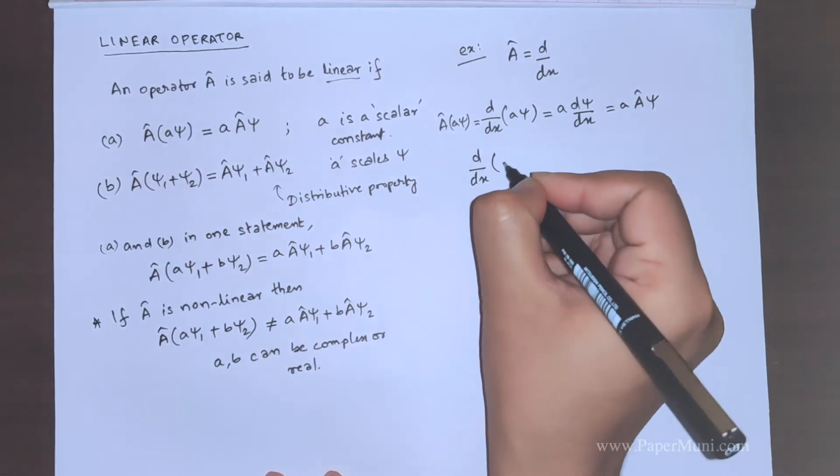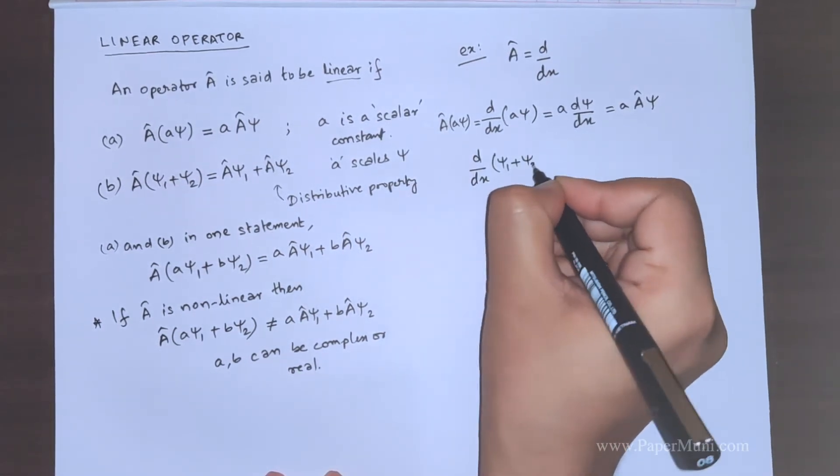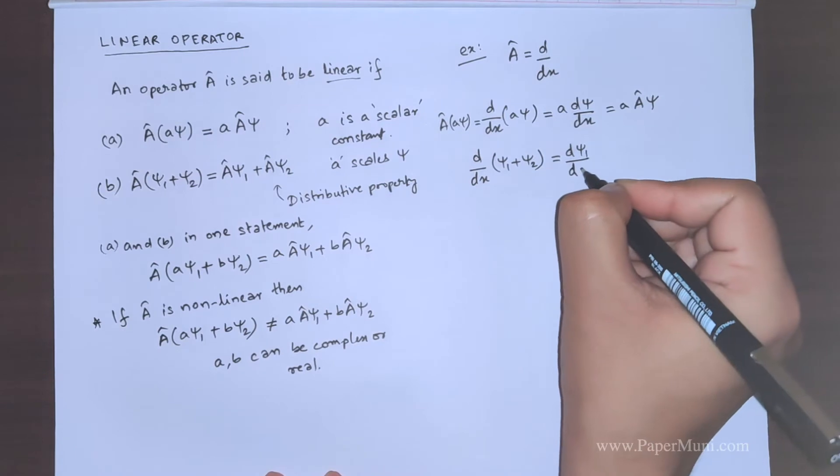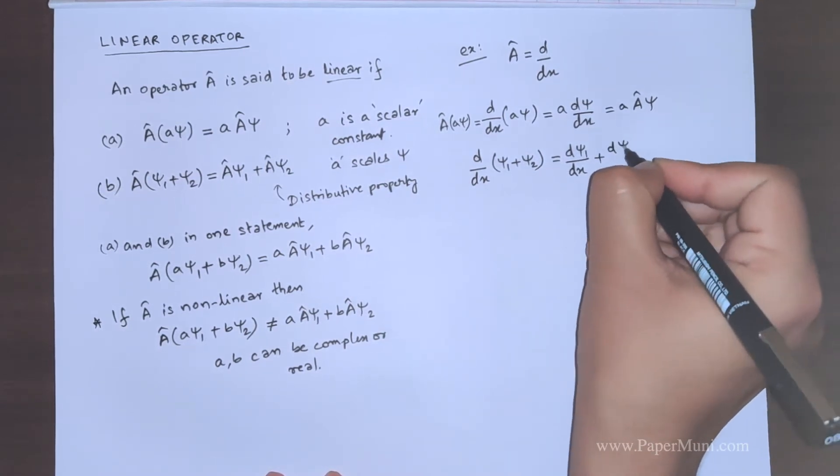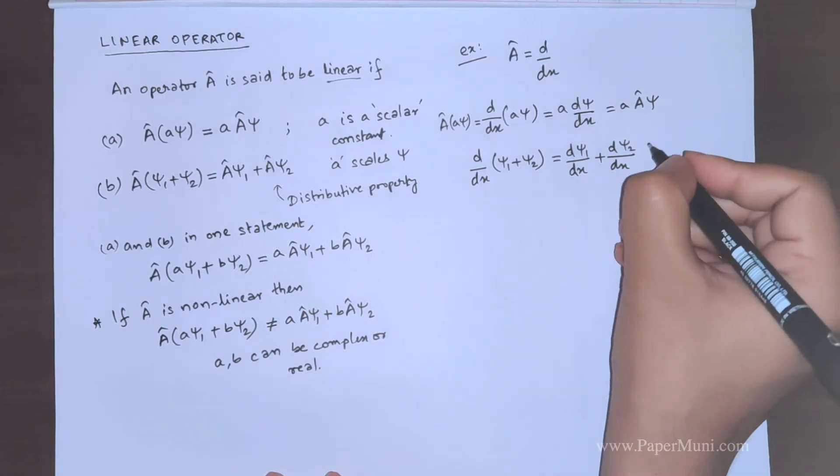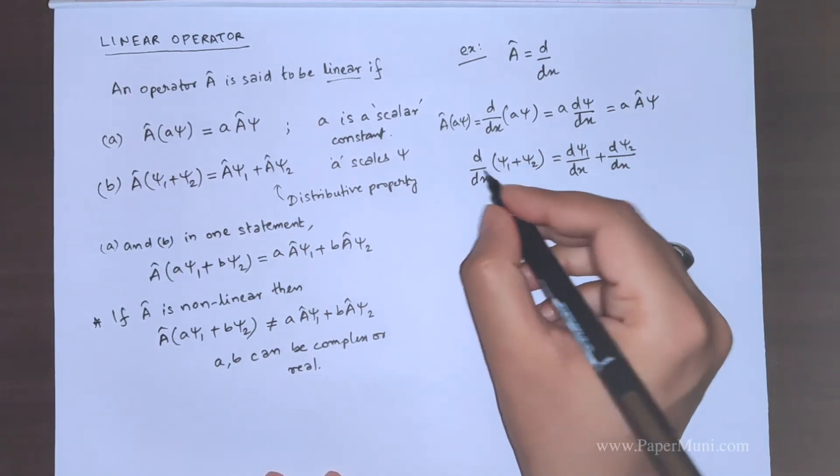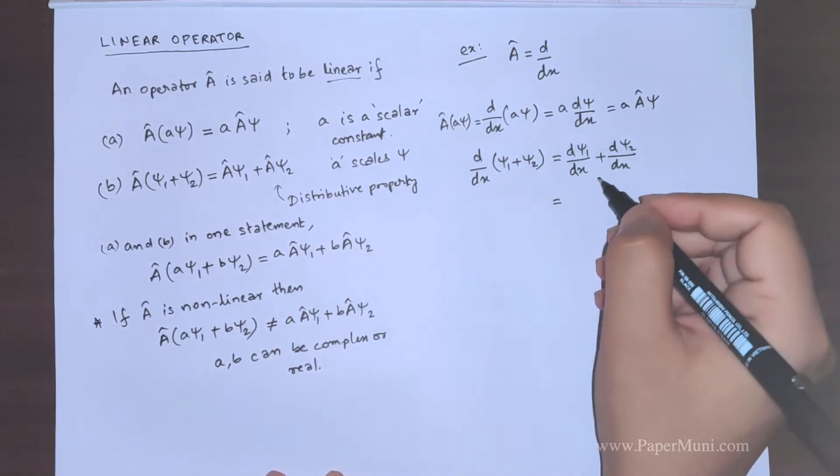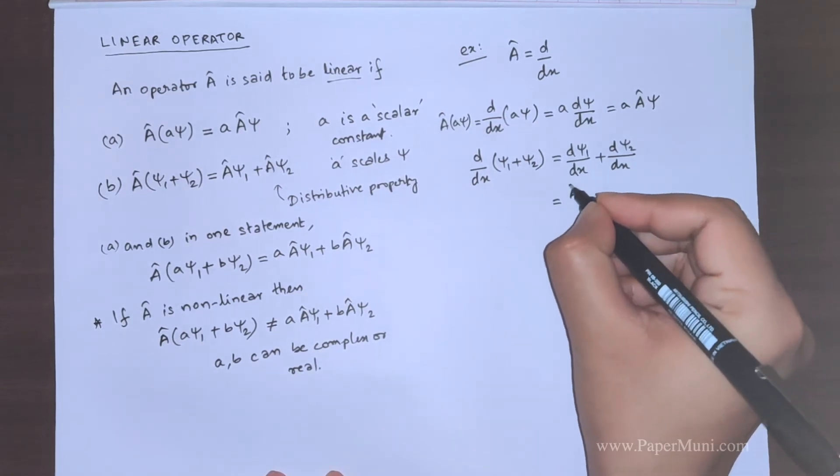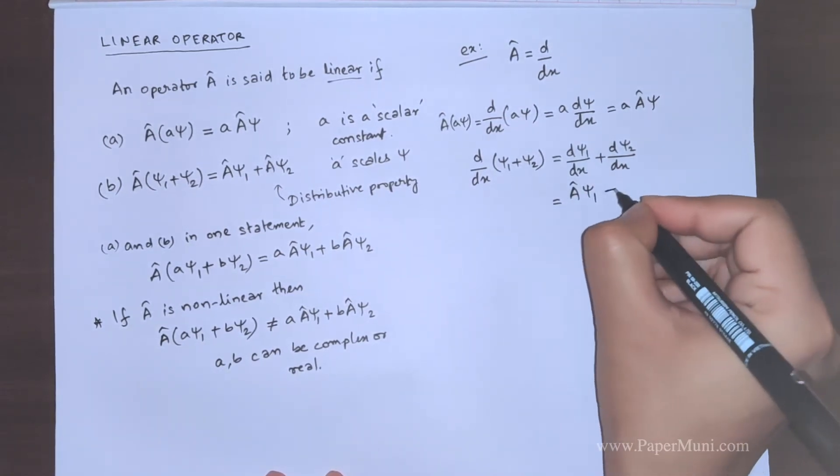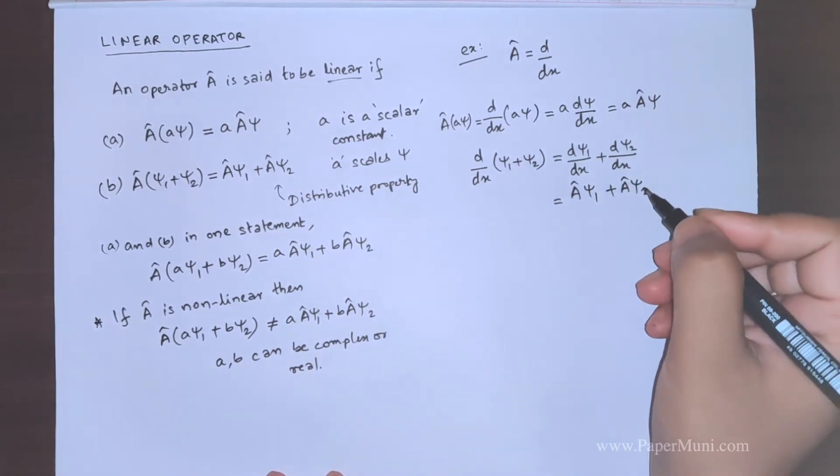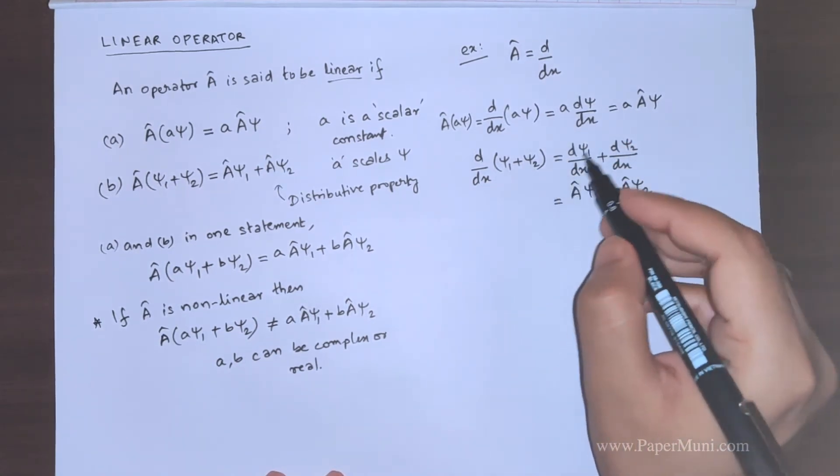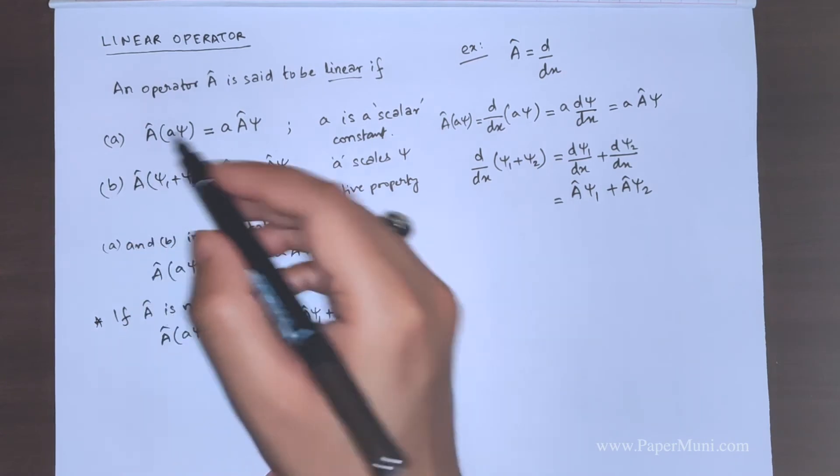d by dx psi 1 plus psi 2 is equal to d psi 1 dx plus d psi 2 dx. We know that this operator d dx operates on psi 1 and psi 2. We can write, we can say that this is equal to this. Psi 1 and psi 2 are two different wave functions. We can see that this satisfies both the things, the A condition and the B condition or we could have used directly this.